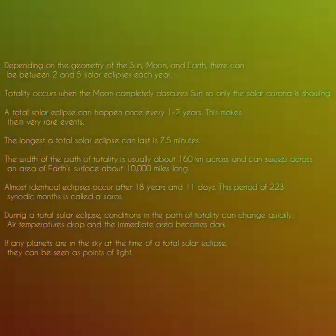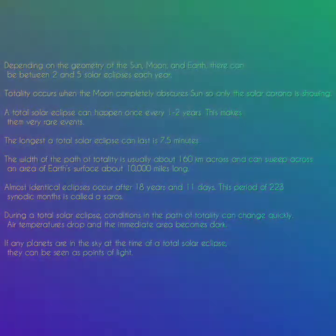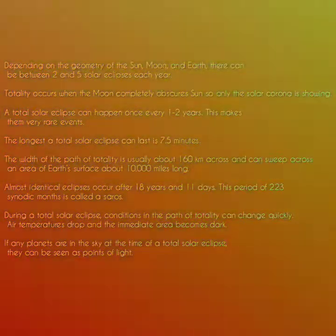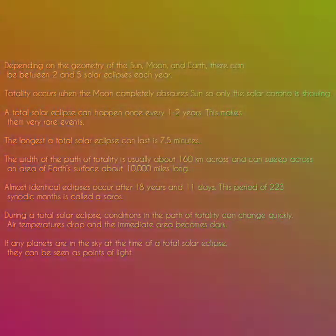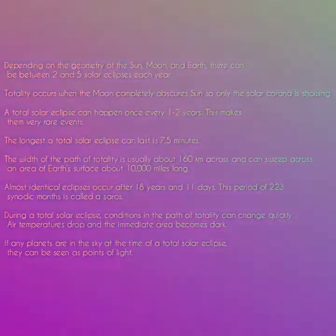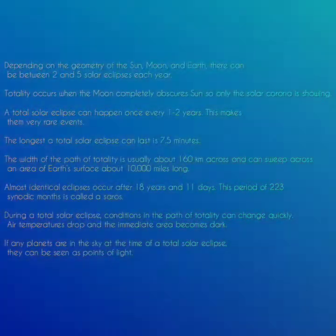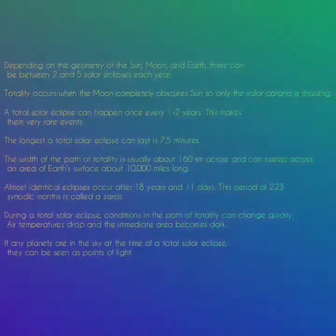The width of the path of totality is usually about 160 kilometers across and can sweep across an area of earth's surface about 10,000 miles long. Almost identical eclipses occur after 18 years and 11 days — a period of 223 synodic months.